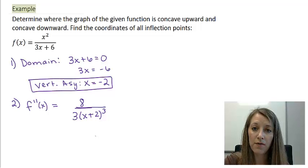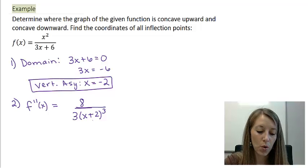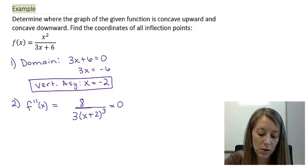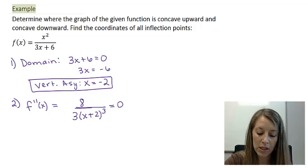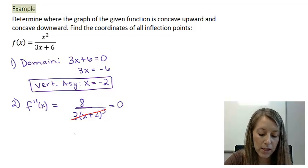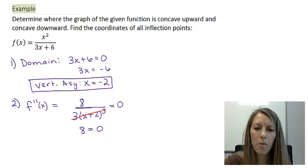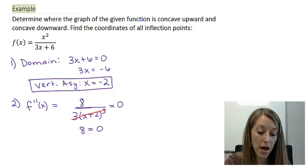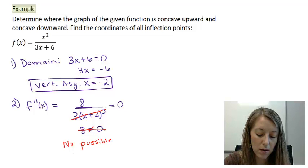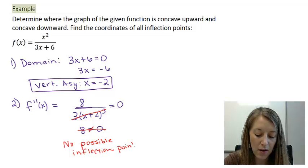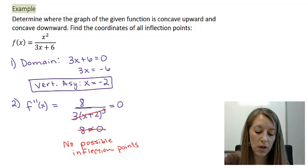If you need to see the work of that, that's in the last video. Go ahead and set this equal to zero and solve. When we solve this, we can eliminate the denominator, so basically we just have the numerator equal to zero. It's almost like a trick question though, because 8 cannot equal zero, meaning we have no possible inflection points.